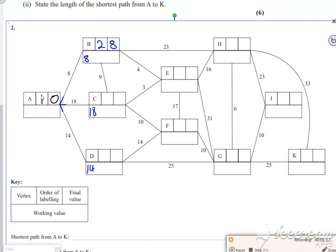Then I look at B and I look at all the ones that haven't got permanent labels. I update the distance so it's eight plus 23 is 31, eight plus four is 12, and eight plus nine is 17. The 17 is smaller than 18 so you update it. Please do not cross out the 18, leave the 18 there.